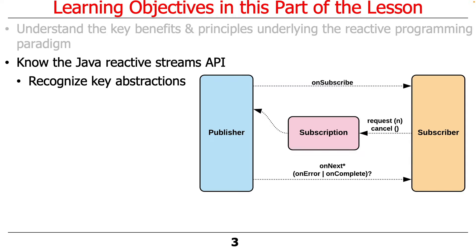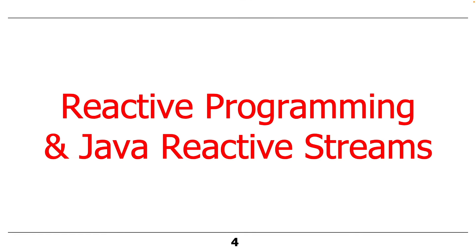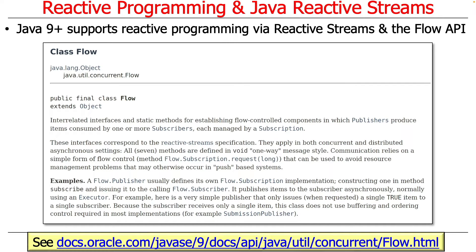There are a couple of key abstractions here, namely publishers, subscribers, and subscriptions. Java 9 and beyond defined a reactive programming API called reactive streams, which had a set of interfaces that were part of what was called the Flow API or the Flow class.